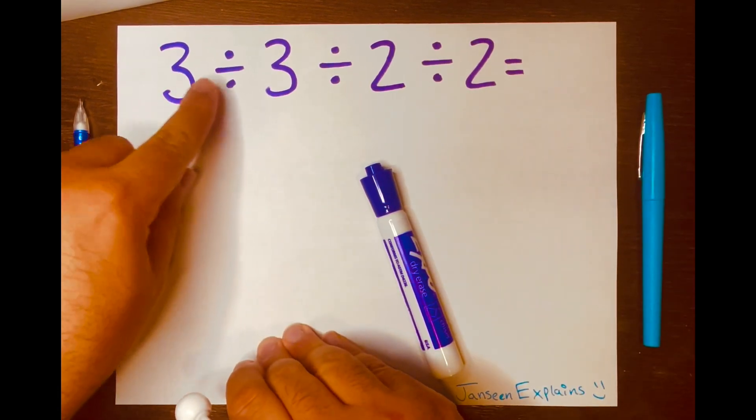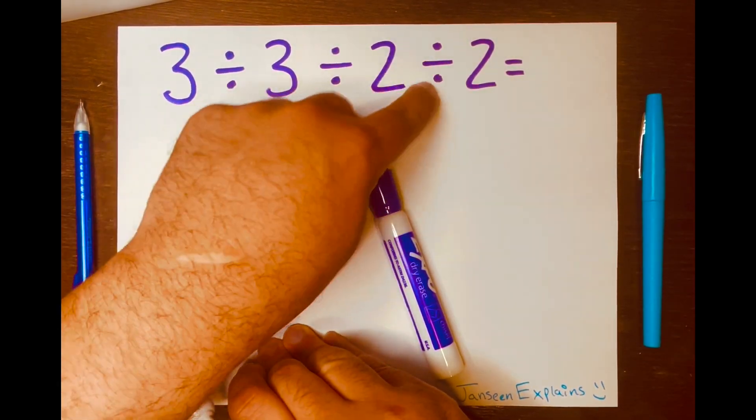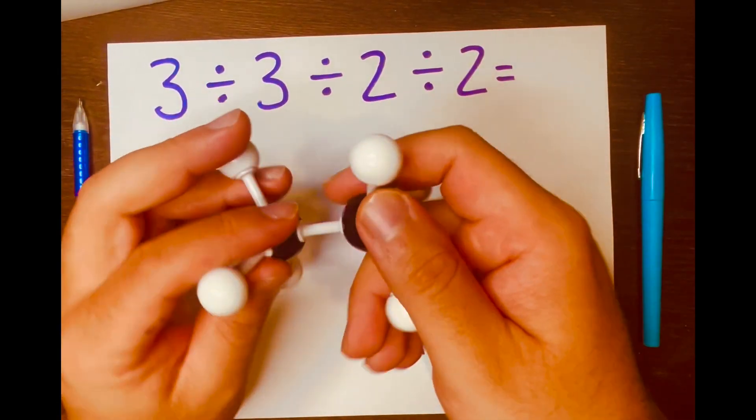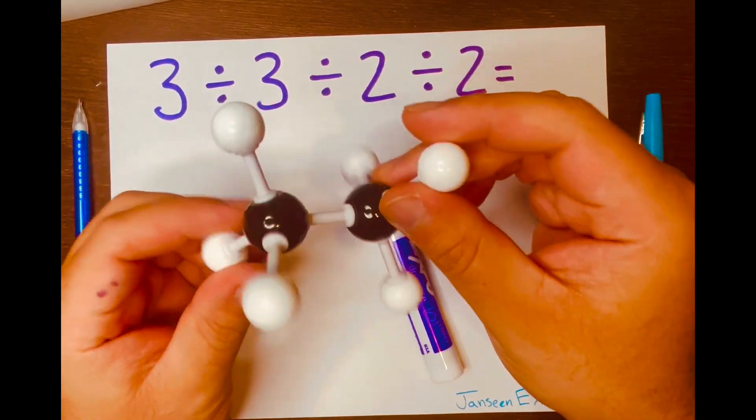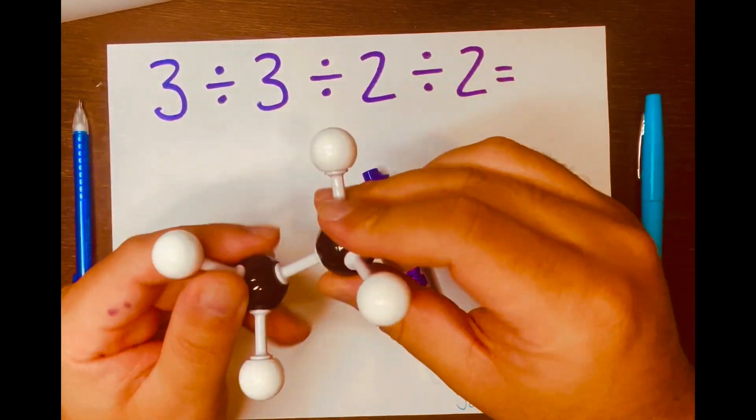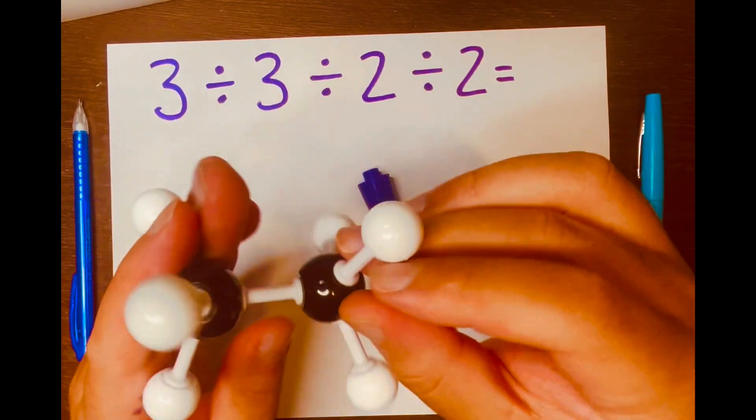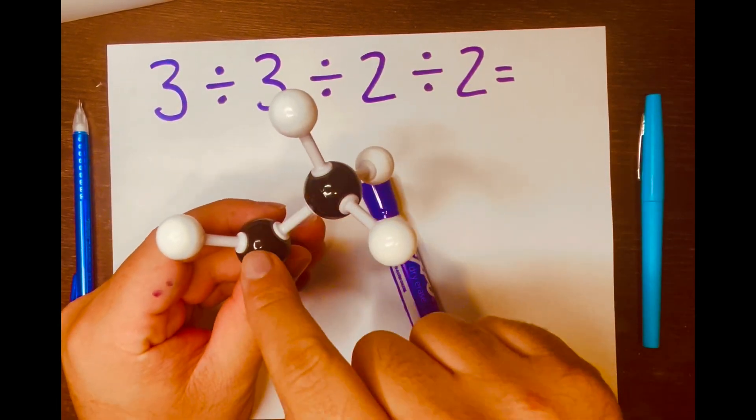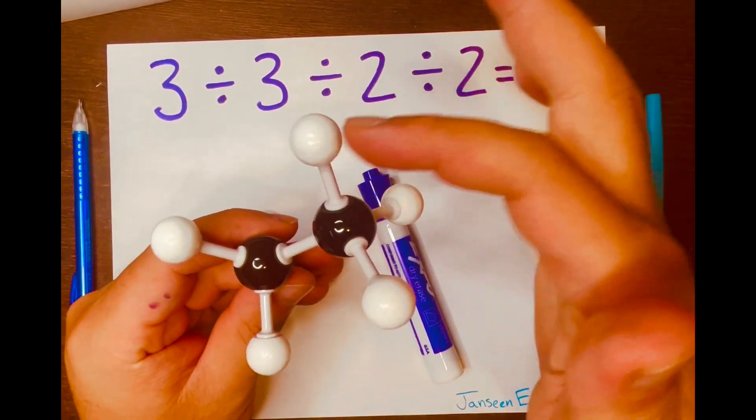Now before I start solving 3 divided by 3 divided by 2 divided by 2, take a close look at this 3D molecule right here. As you can see, it's made of two black spheres and six white ones.